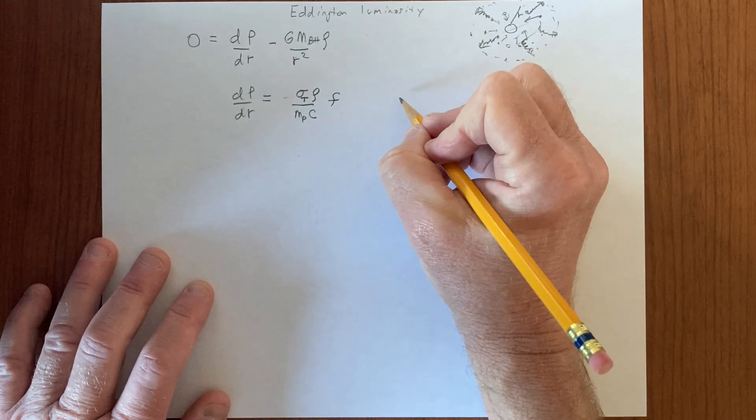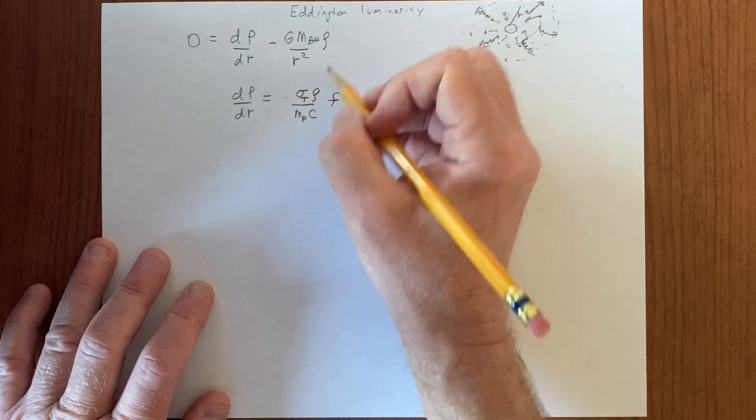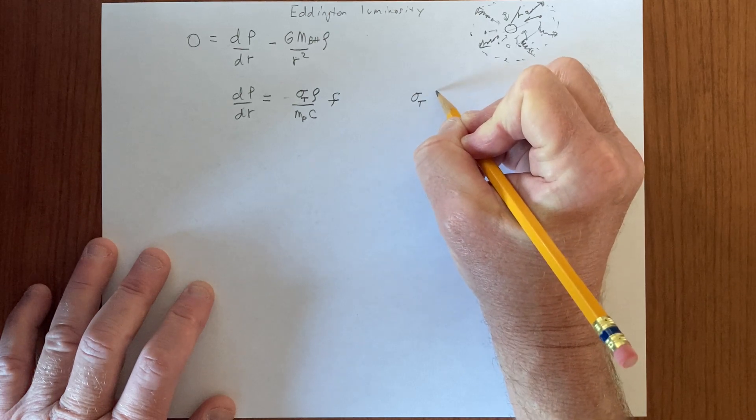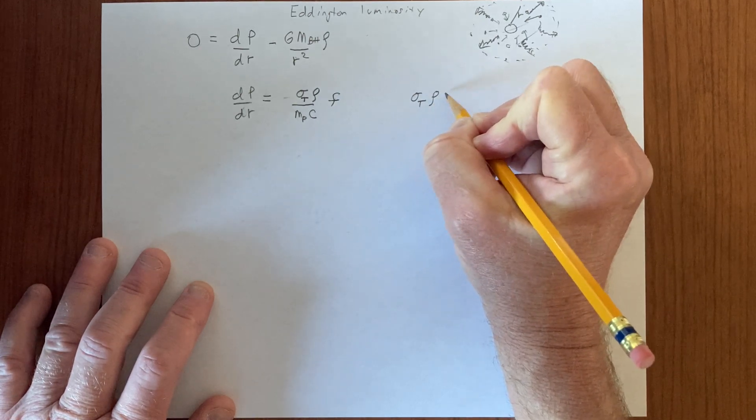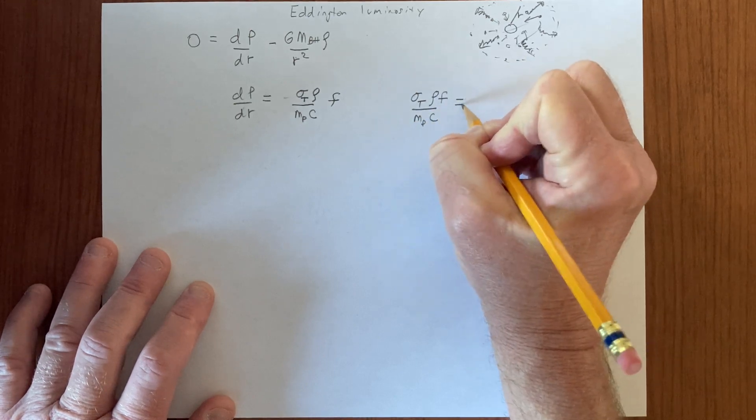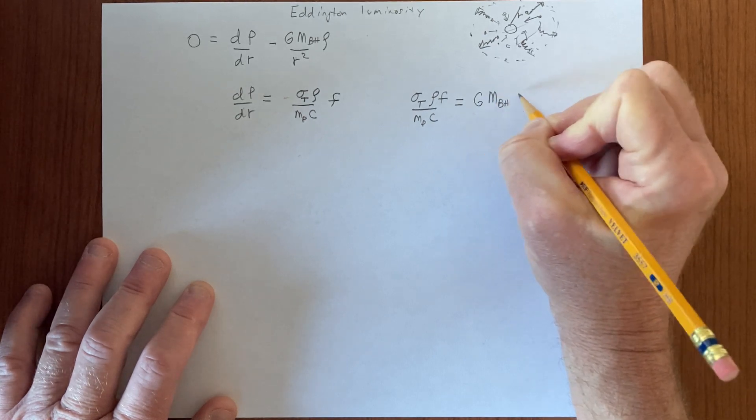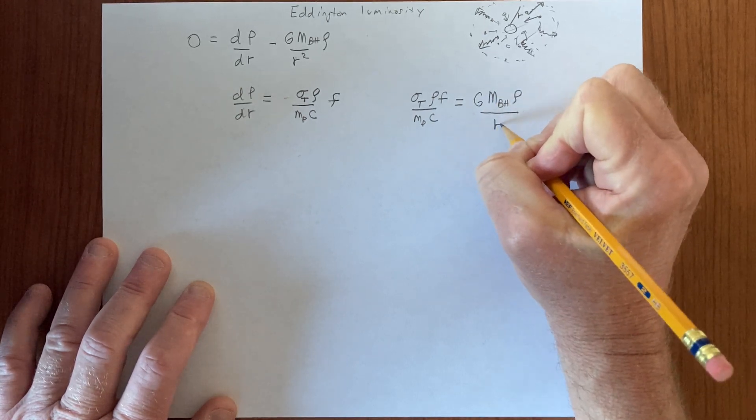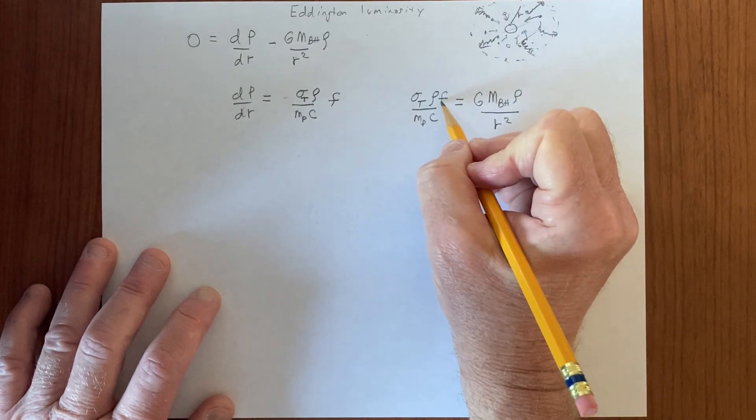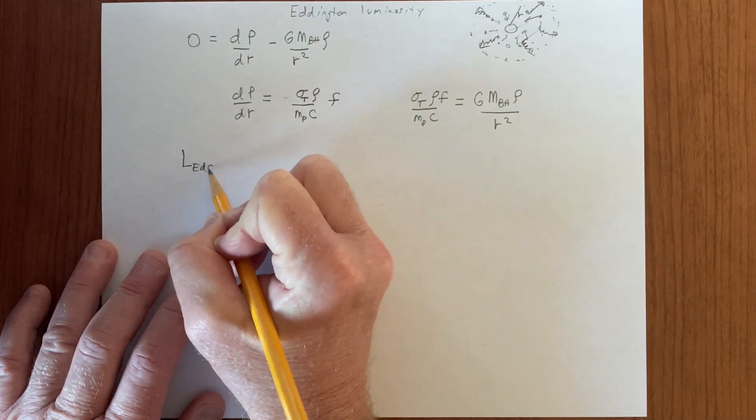This gives us, so this term ends up being equal to that term, so we have sigma t rho times f over mpc equals g m black hole rho over r squared. Here is the flux, and if we integrate the flux, we'll get this luminosity, so we'll call this the Eddington luminosity, L Eddington equals the integral of the flux.